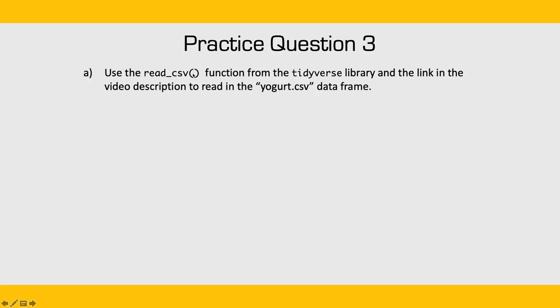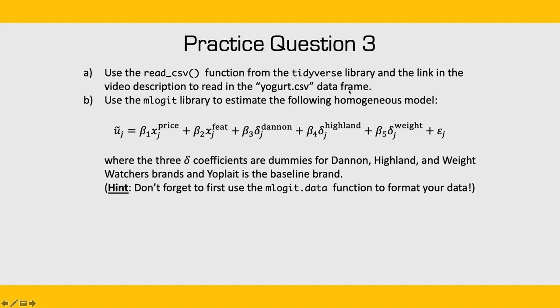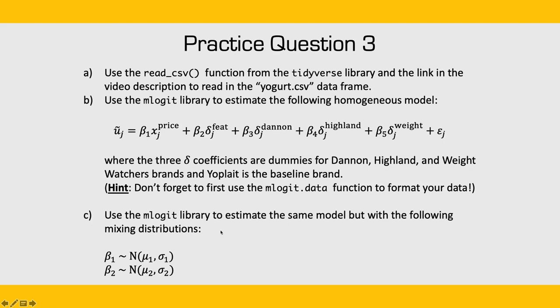For practice question three, we'll use a real data set and estimate a mixed logit model. First, use the read_csv function from the tidyverse library with the link in the video description to read in the yogurt.csv data frame. Using the mlogit library, estimate a homogeneous model with a continuous price attribute, a dummy feature attribute describing whether the yogurt was featured, and three dummy coefficients for brands Dannon, Highland, and Weight Watchers — with Yoplait dummied out as the baseline brand. Remember to first use the mlogit.data function to format your data. Then estimate a heterogeneous model by adding mixing distributions, with both beta 1 and beta 2 normally distributed with mean and standard deviation.